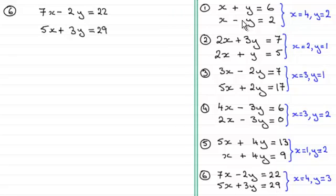I'm assuming that you've worked your way through these ones here. In this particular question number six it's different because neither the x terms nor the y terms are exactly the same. So how do we go about solving something like this?